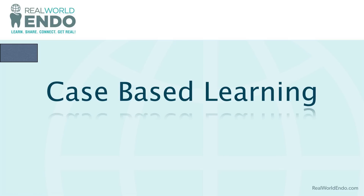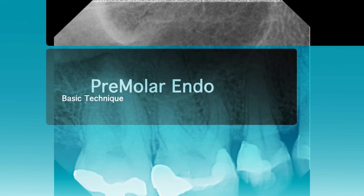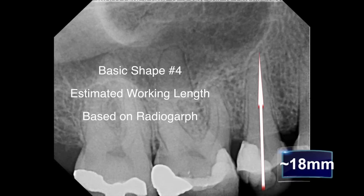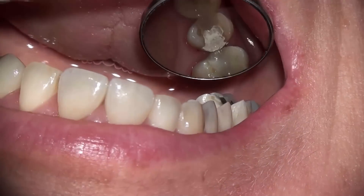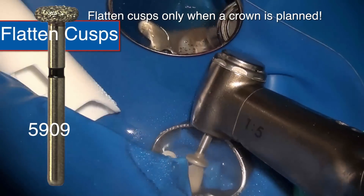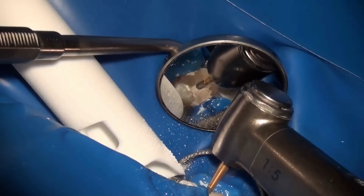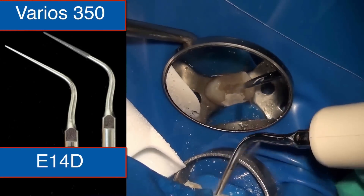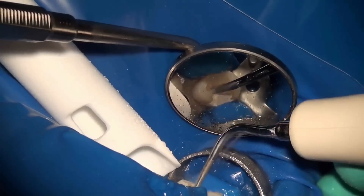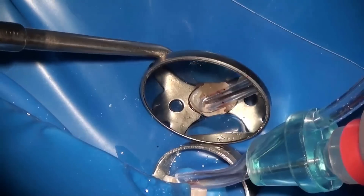Now let's use a premolar to showcase this technique. It's a fairly straightforward case — a second premolar — the kind every clinician would see in practice. I always estimate the length from the radiograph; here it's about 18 millimeters. The tooth had caries control that went into the pulp — irreversible pulpitis. I flatten the cusps to reduce occlusion postoperatively and give myself stable reference points, then use the saber cut bur from the real endo access kit for an oval outline form, followed by ultrasonic with water to remove debris.